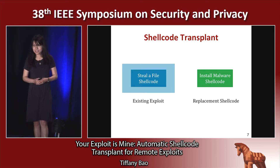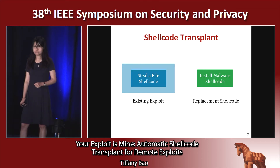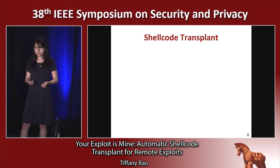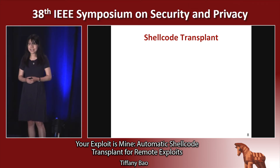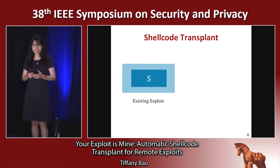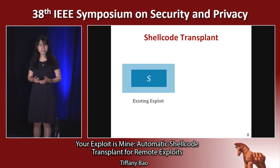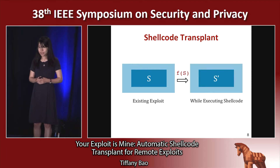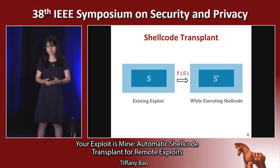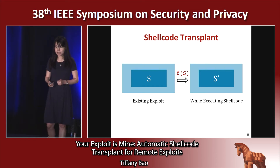At first glance, it seems that shellcode transplant is easy. All you need to do is to strip out the original shellcode and put your own shellcode into the existing exploit. However, the shellcode that is actually executed may not be exactly the same as what we see in the exploit. When a program processes an exploit as an input, it may change the input bytes to other values. In order to generate a new successful exploit, we need to figure out how the program processes this input so that after processing, we will get the expected shellcode in the end.